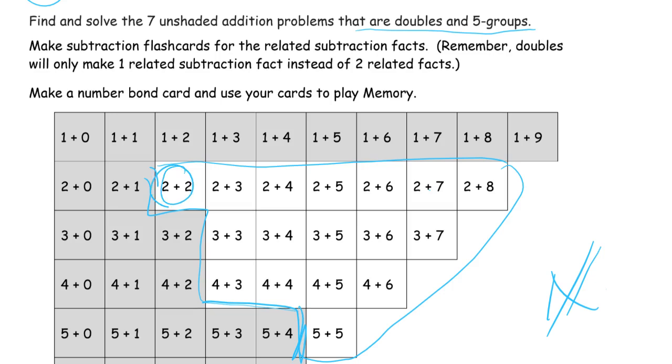Well, two plus two — that's a double, so we're going to do that one. And we get three plus three, and four plus four, and five plus five. There are your doubles.